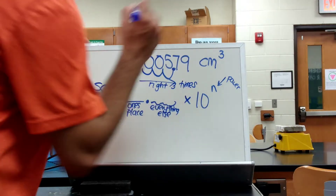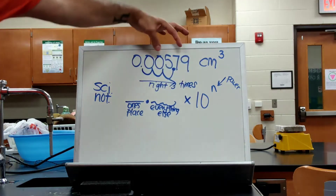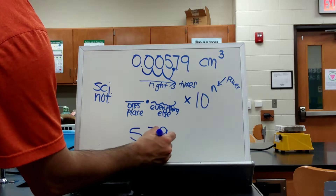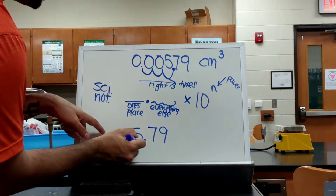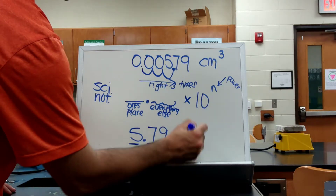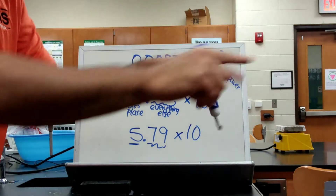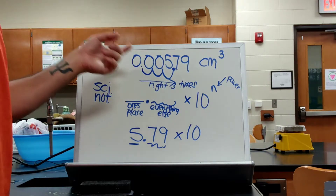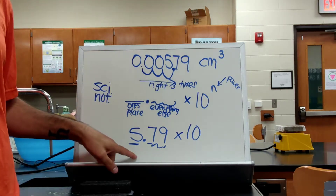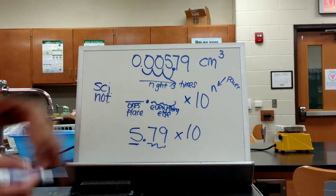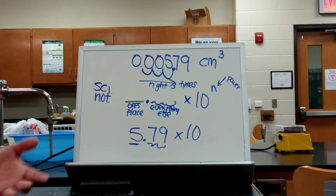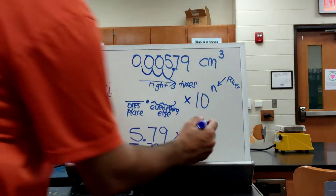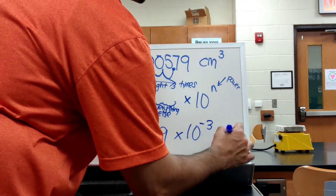And I'm going to show you where that comes up. So now I have 5.79 — my ones place is 5, everything else is .79 — times ten to the... I moved it to the right three times. I made my number bigger, but it's originally a smaller number: 0.00579 is smaller than 5.79. And because of that, I need to use a negative exponent. However many places I move to the right, I make it negative that many spaces. So it's times ten to the negative third centimeters cubed.